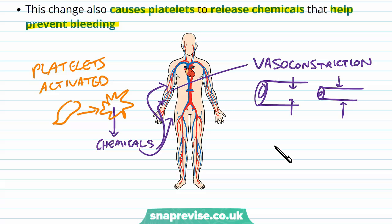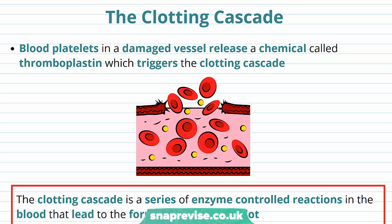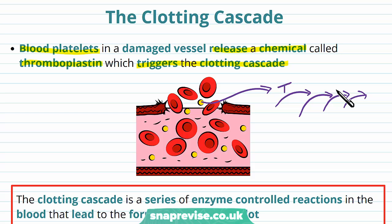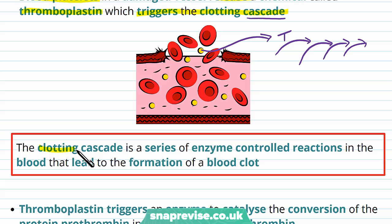Up to this point, activated platelets have formed a general clot to cover the hole in the vessel, but this can't last forever. We need a more stable structure which can withstand the pressures running through the vessel while the endothelium repairs itself. There's actually a cascade of chemical reactions which happens to help finalise the clot. The damaged vessel's platelets start releasing a chemical called thromboplastin, and this triggers something called the clotting cascade — a series of enzyme-controlled reactions in the blood leading to the formation of a blood clot.